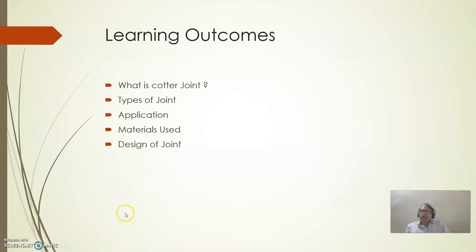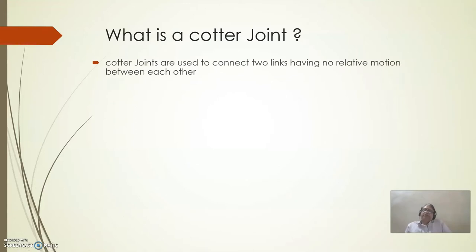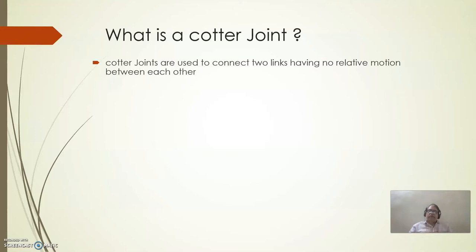What is a cotter joint? Cotter joints are used to connect two links having no relative motion between each other. If you consider a knuckle and a cotter joint, in both cases we are transferring force, either tensile or compressive. But the difference from the knuckle joint is that there is no rigid connection between the two parts in a knuckle joint — it is free to oscillate around the pin. The axial movement will not be there, but we will have rotation or sliding if you use a slider crank mechanism.